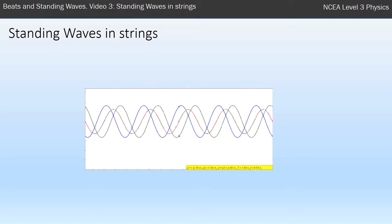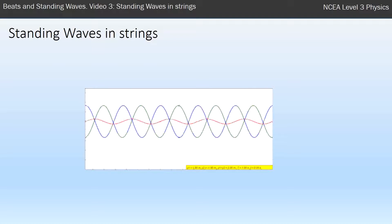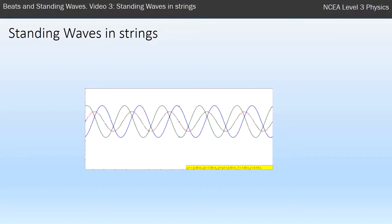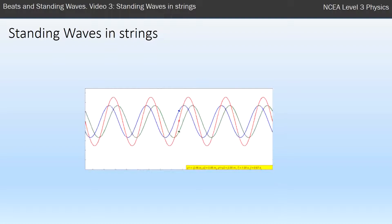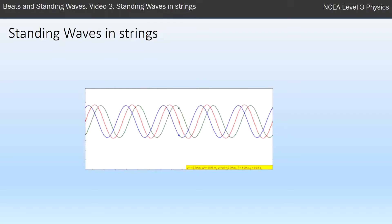So here, just to go over that again, I've got what looks like three waves here but really there's a green wave going to the right and a blue wave going to the left, and the red wave is the sum of those two waves—it's those two waves added together.